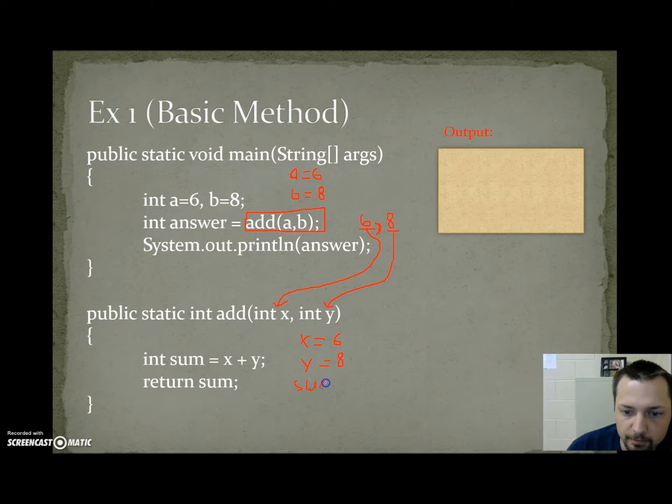So sum equals 14. And here I return sum. But I'm not actually returning sum. Sum only exists in this method. It will not exist in main. I'm returning the value of sum, which is 14. So 14 is being sent all the way back to this location where the method call is. The method call gets replaced with the value 14, and we have int answer equals 14, system.out.println answer, and that would be 14. So the output for this program is 14.